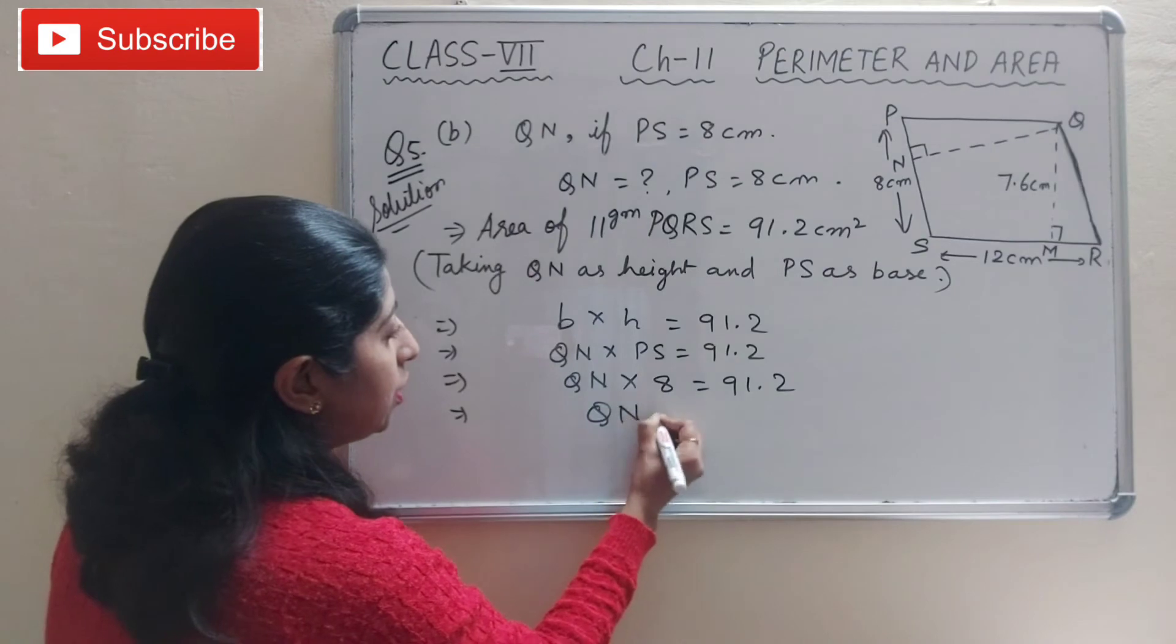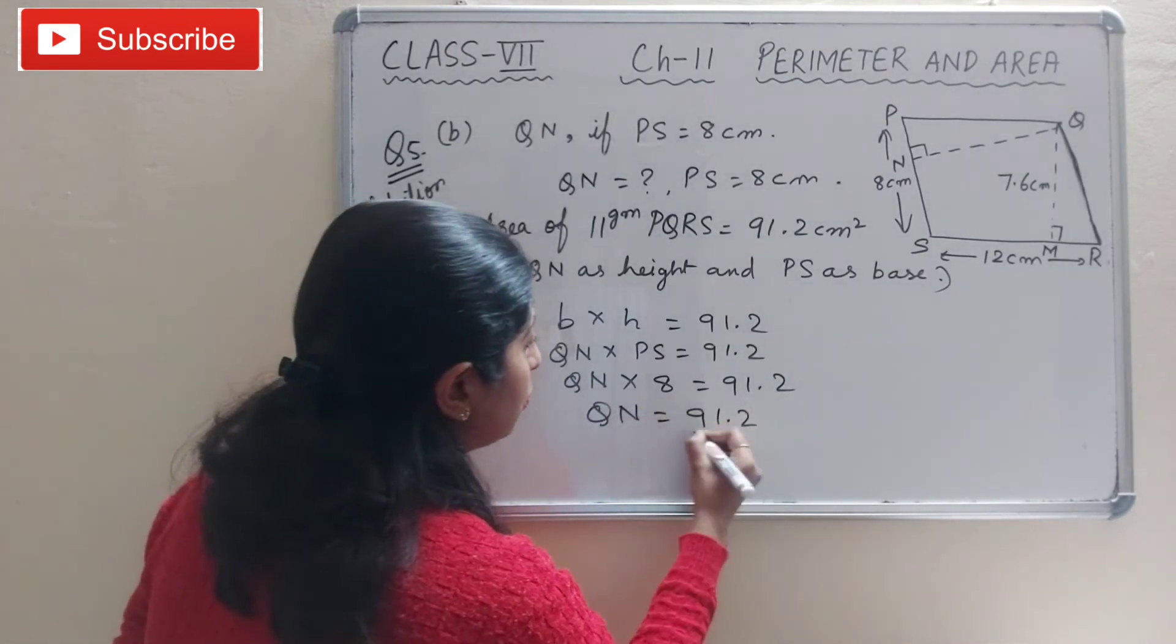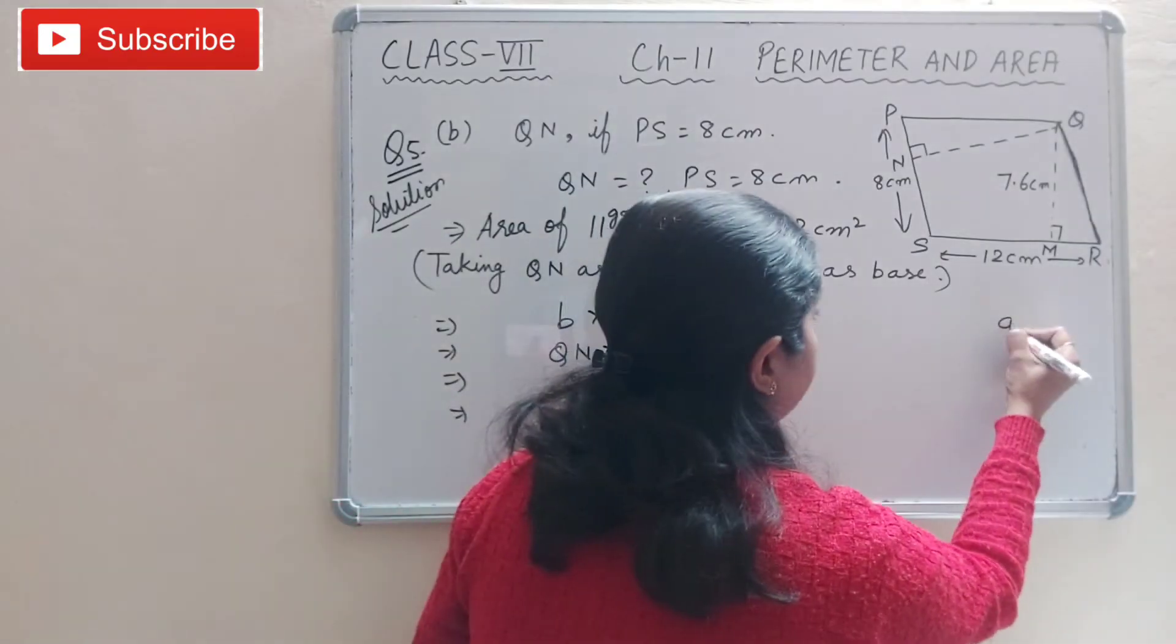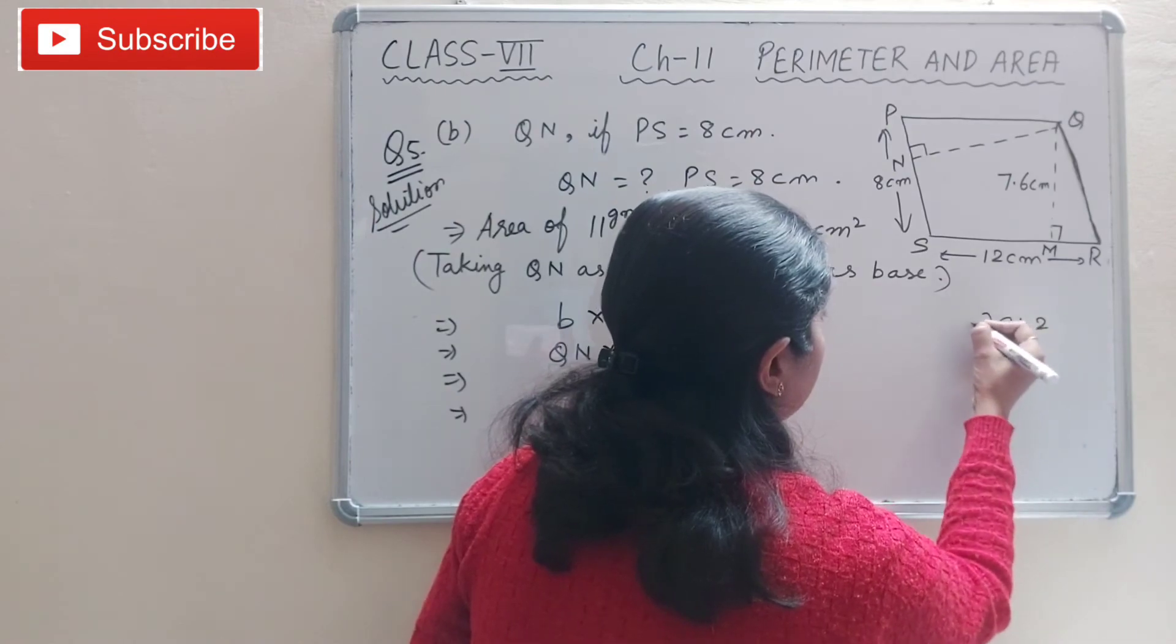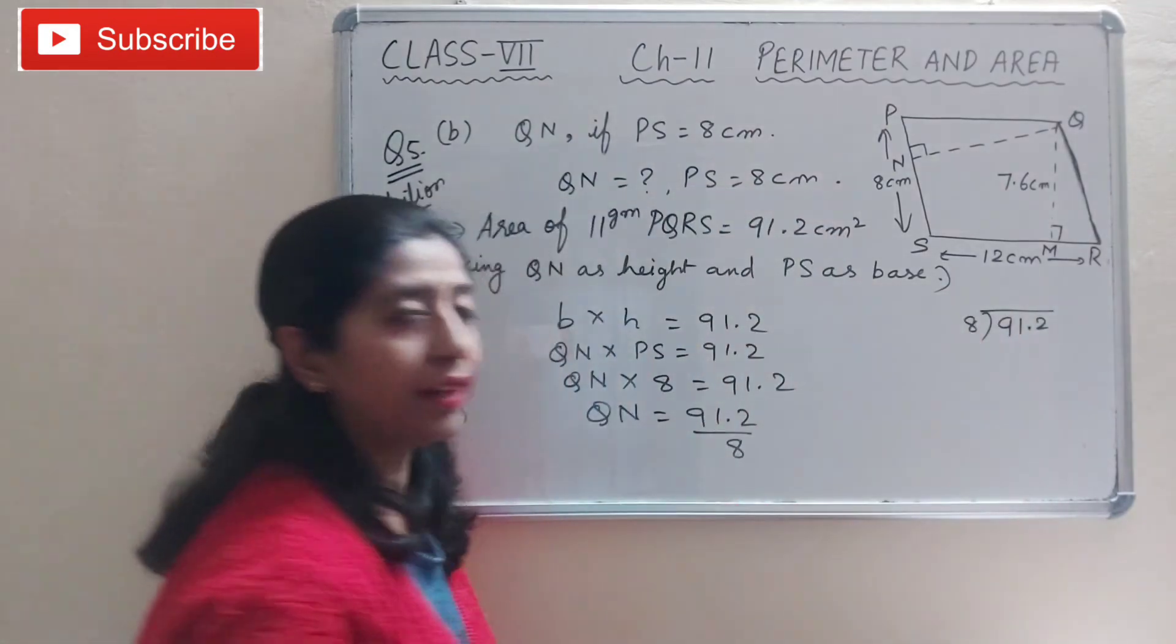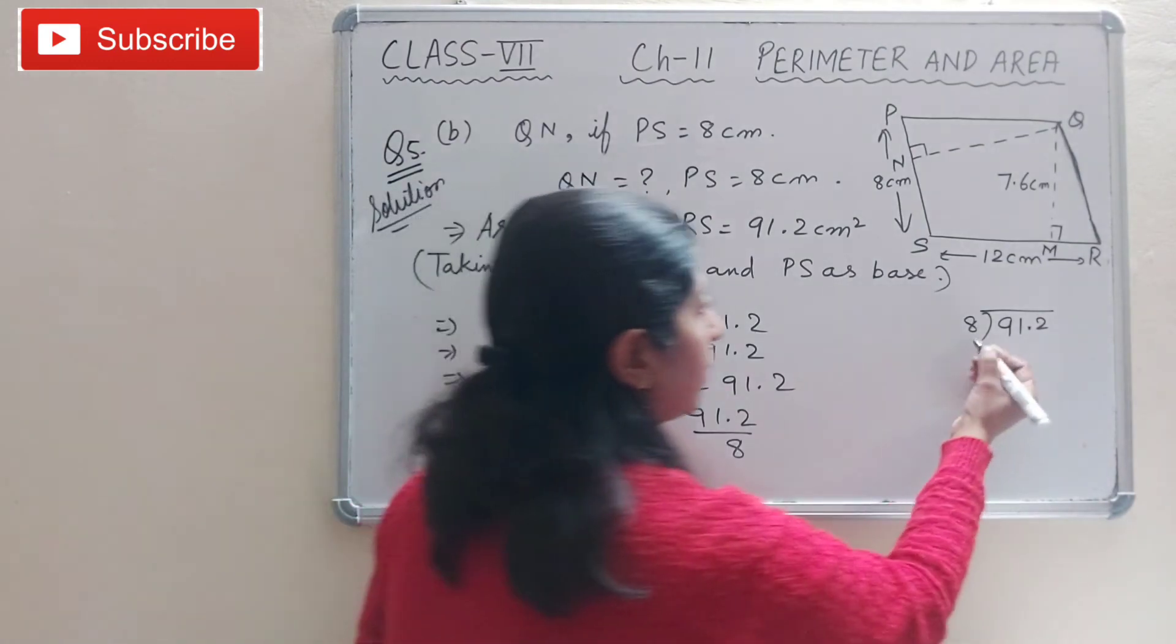Now QN is equal to 91.2 divided by 8. We will divide 91.2 by 8.